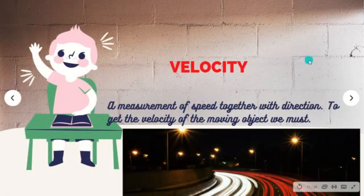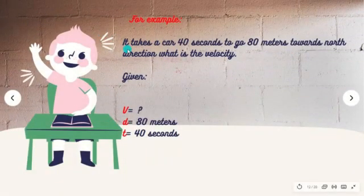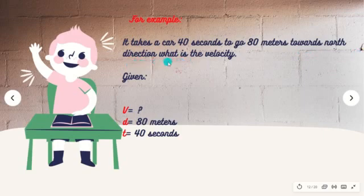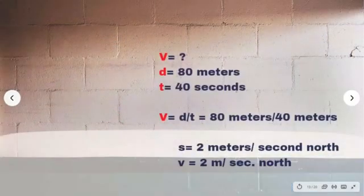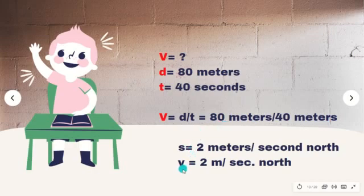Velocity is a measurement of speed together with direction. To get the velocity of a moving object, here is an example: It takes a car 40 seconds to go 80 meters toward the north direction. What is the velocity? Velocity (v) = d/t = 80 meters divided by 40 seconds. The answer is 2 meters per second, north.